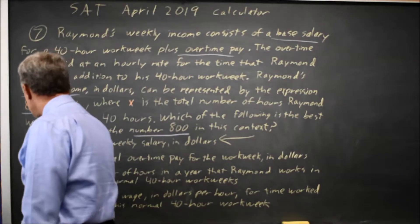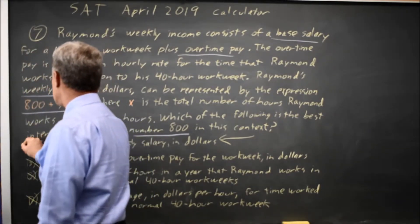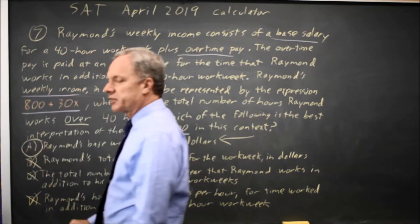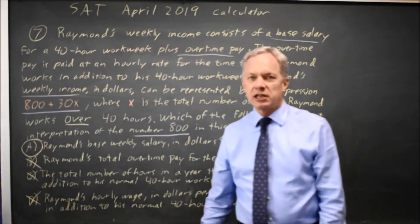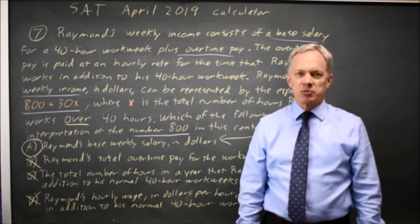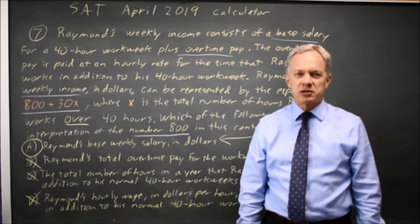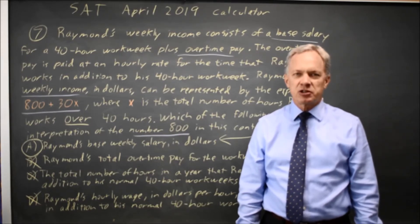But they're not asking about the slope 30, they're asking about the intercept. So the correct answer is choice A. Remember, the College Board will ask you to interpret slope or intercept, or both, in context. It's important to read the question carefully to make sure you're identifying the correct context.